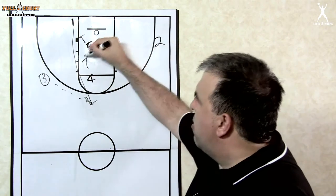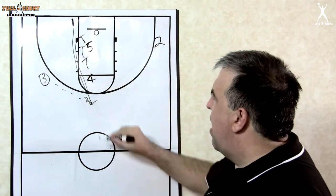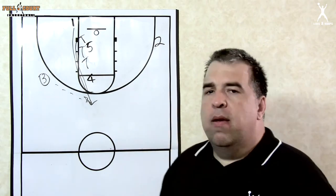Another option you would have here is for four to screen for five. So five sprints up to the top of the key and sets the ball screen for one.